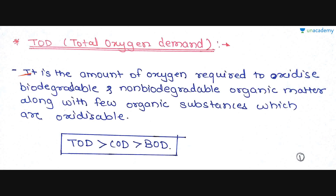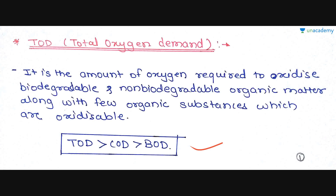TOD is the amount of oxygen required to oxidize biodegradable and non-biodegradable organic matter, along with a few organic substances which are oxidizable. That is why TOD is greater than COD, and COD is greater than BOD. TOD is greater than COD because it covers biodegradable and non-biodegradable organic matter plus some oxidizable substances, whereas COD represents both biologically active and inactive organic matter, and BOD gives only biologically active organic matter.